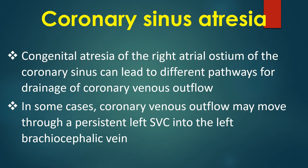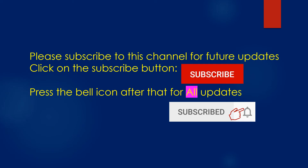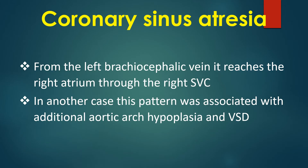Congenital atresia of the right atrial ostium of the coronary sinus can lead to different pathways for drainage of coronary venous flow. In some cases, coronary venous flow may move through a persistent left superior vena cava into the left brachiocephalic vein. From the left brachiocephalic vein, it reaches the right atrium through the right superior vena cava.